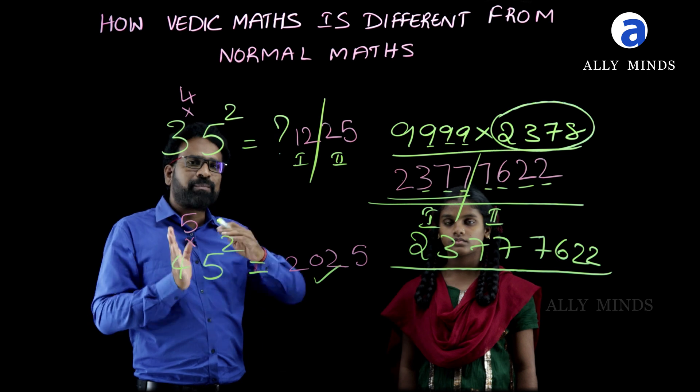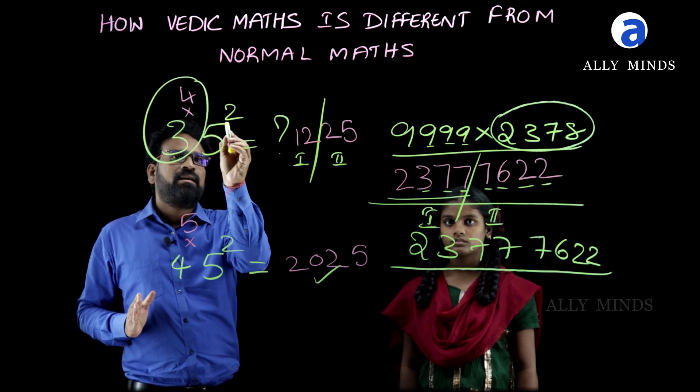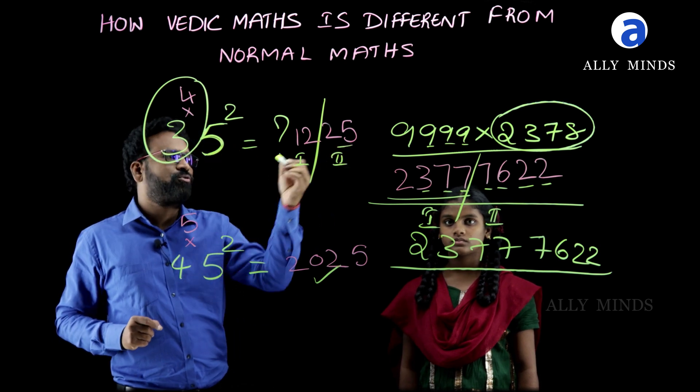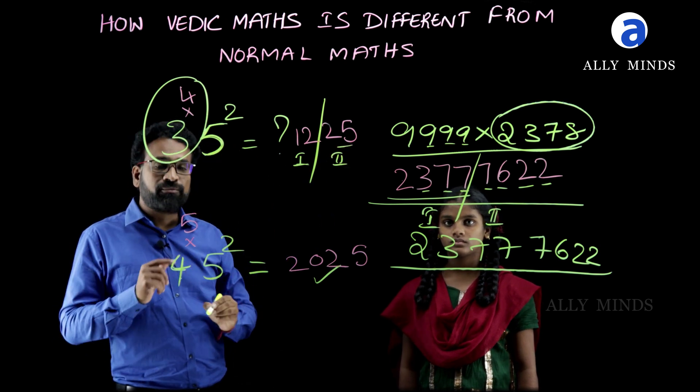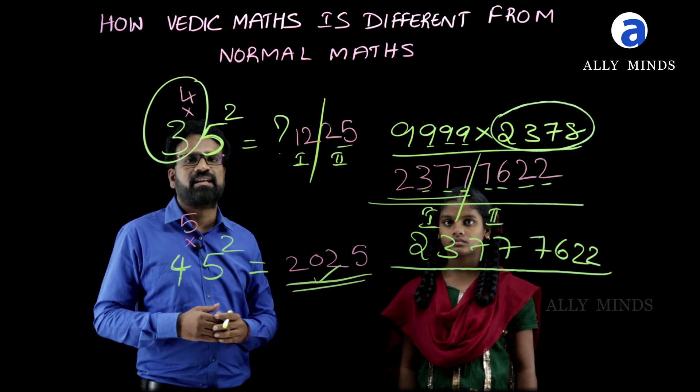So, one more than three is four. Now, three times four is twelve, and as the number is ending with five, write this as five square. Five square is twenty-five. Here one more than four is five. Four times five is twenty, and five square is twenty-five. This is the final answer.